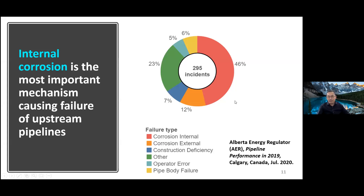This is performance statistics for pipelines operating in Alberta, issued by the AER (Alberta Energy Regulator). In 2019, 46% of pipeline incidents were caused by internal corrosion — this is significant. Internal corrosion is closely related to the internal environment of the pipeline carrying the fluid. For transmission pipelines the data would be very different, because the processed oil and gas transported over long distances has a very different internal environment from upstream pipelines.